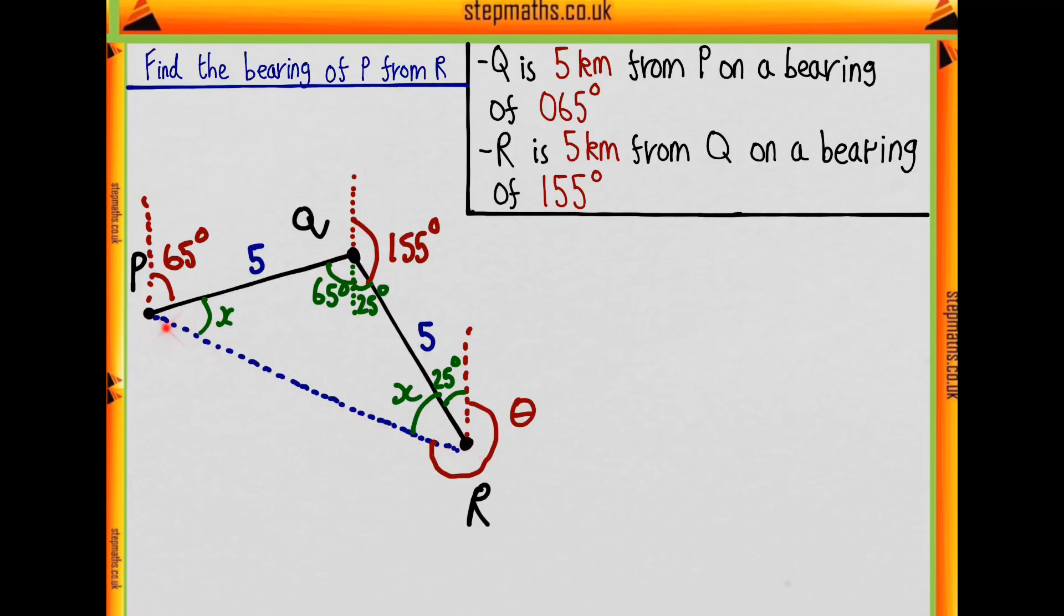Well this triangle, it's an isosceles triangle, isn't it? This is length 5, this is length 5. So these two angles will be the same. We'll mark this as x and this as x.